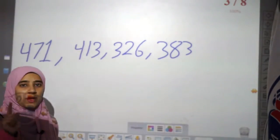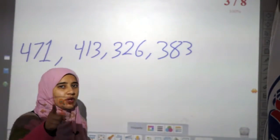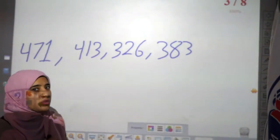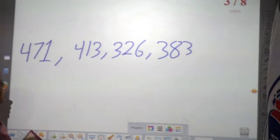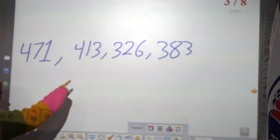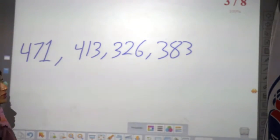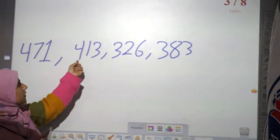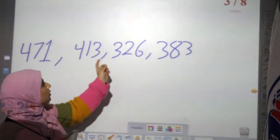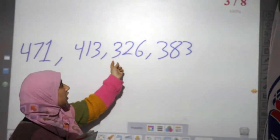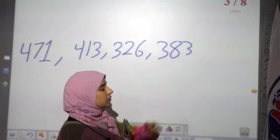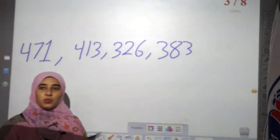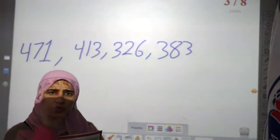Get your copy book and your pencil and start to write with me. He gives you four numbers: 471, 413, 326, 383. He wants you to start with the small number.